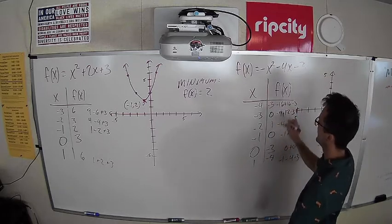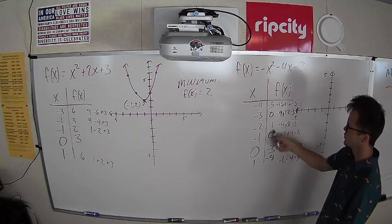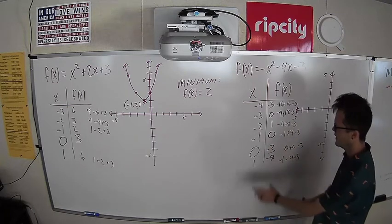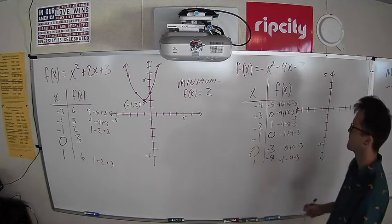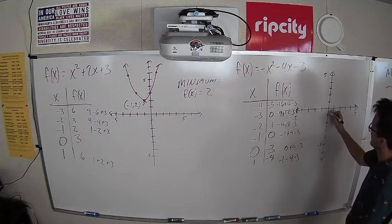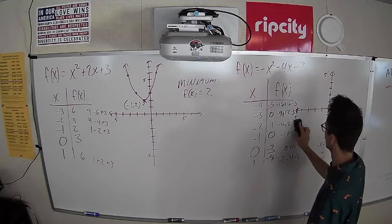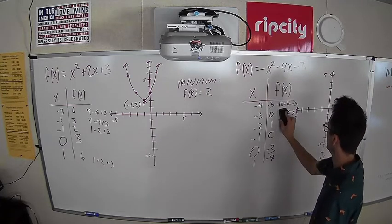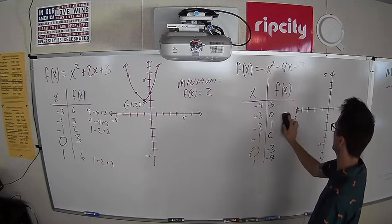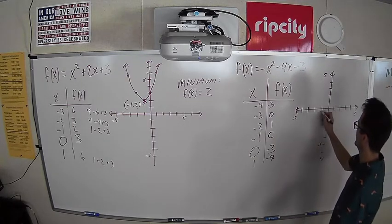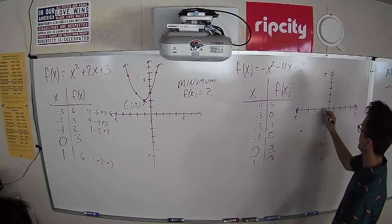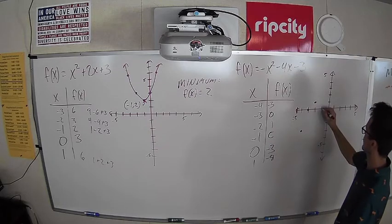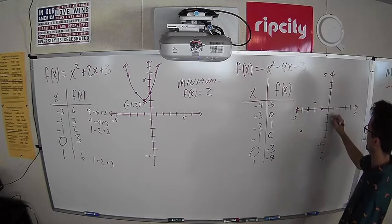So we have our five points: (-4, -3), (-3, 0), (-2, 1), (-1, 0), (0, -3). Let me erase the work here — it was helpful while we had it. Let's plot: negative 4, negative 3. Negative 3, 0. Negative 2, positive 1. Negative 1, 0. And 0, negative 3.